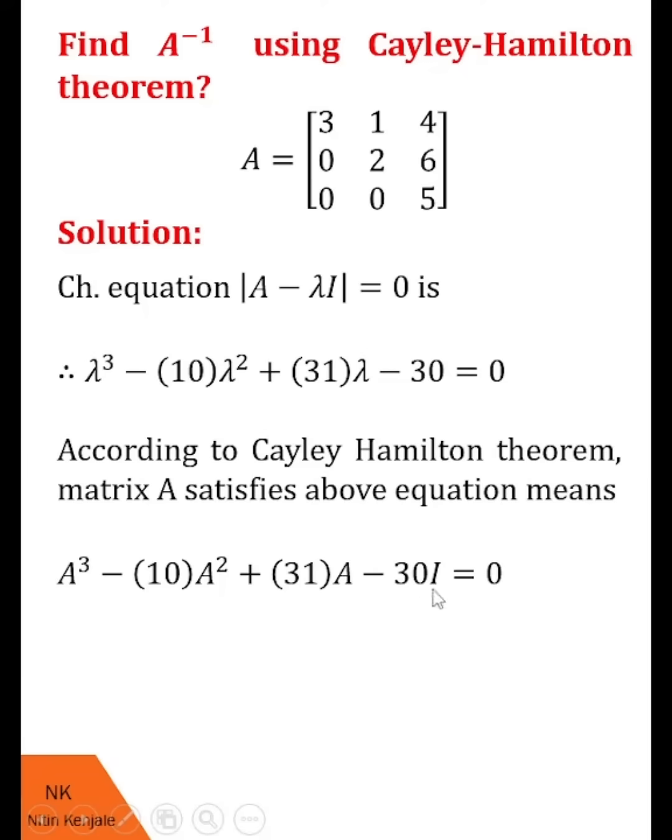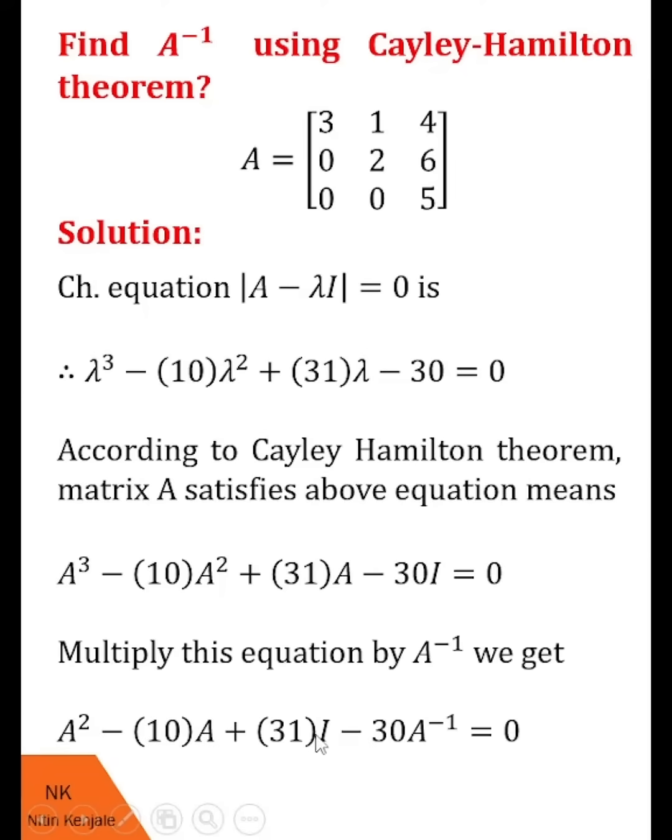Next, to find A inverse, we multiply this equation by A inverse, so we get A square minus 10A plus 31I minus 30A inverse equal to 0.